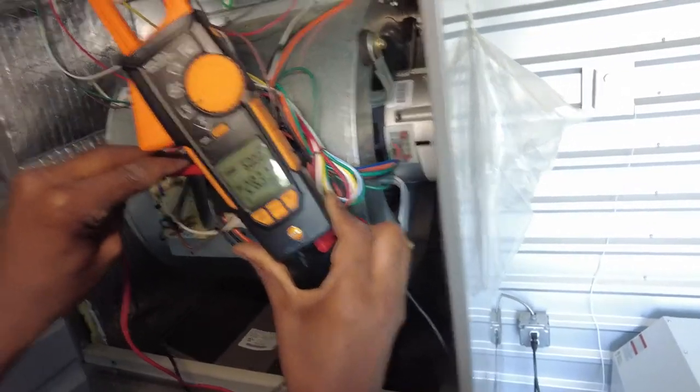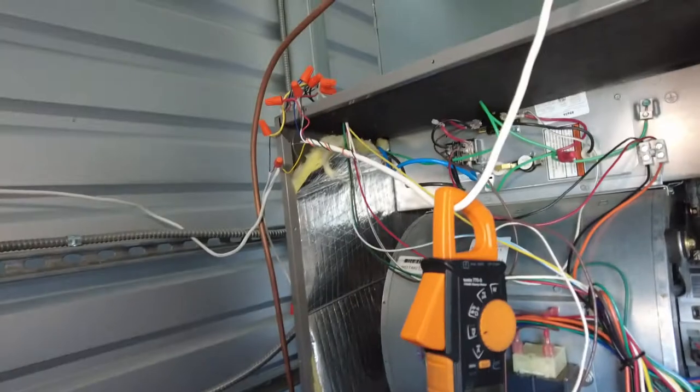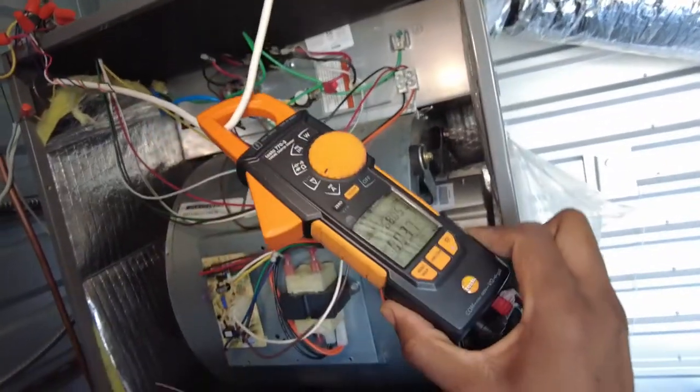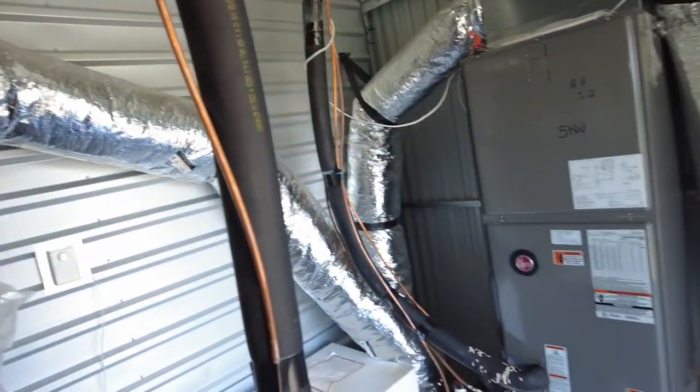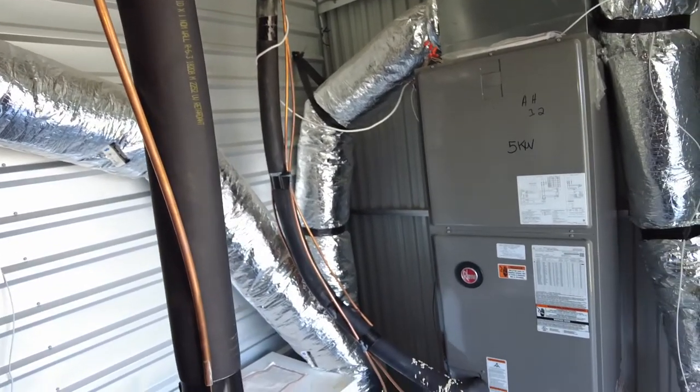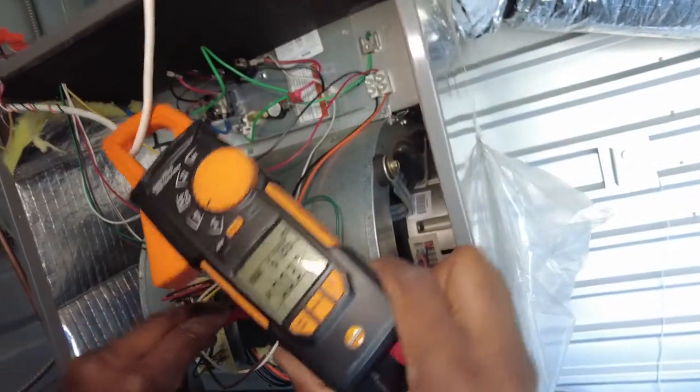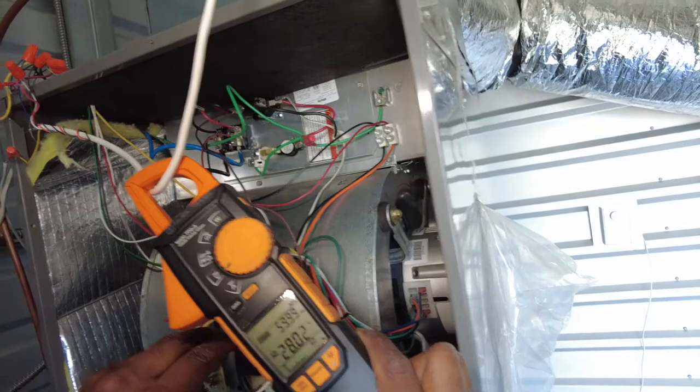There you go, 28 volts. Now we should have enough boost to pull that contactor in and keep it in. And like I said, I just checked that unit. That one's got 22 volts too going to the contactor. It's holding, but it needs to be swapped as well. So all the units probably in this whole facility are going to have to be changed over. 28 volts looks a whole lot more reasonable.